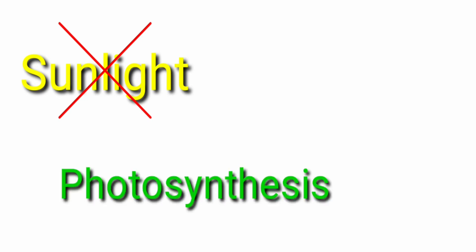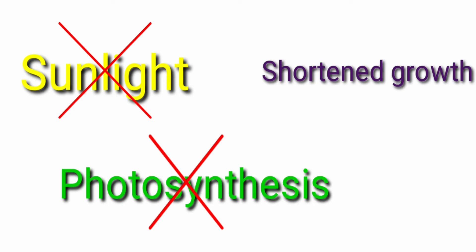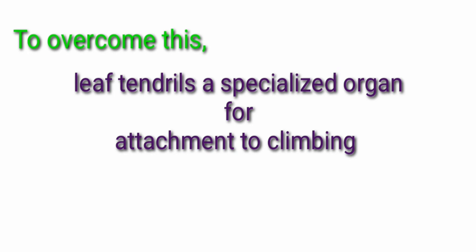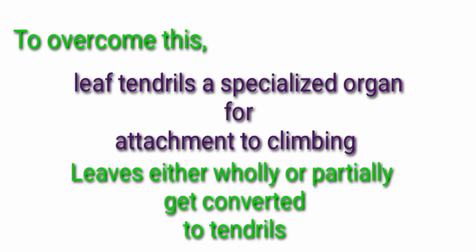Correspondingly it affects the photosynthesis process. Photosynthesis is the process of preparation of food material. When the food material is in shortage, it results in stunted growth of plant and malnutrition. So it finally results in death of plant. To overcome this kind of problem, the leaf tendrils are found in the weak stemmed plants as a specialized organ for attachment and climbing. The tendrils are the green thread-like structures which help to coil on neighboring objects to give support and attachment.